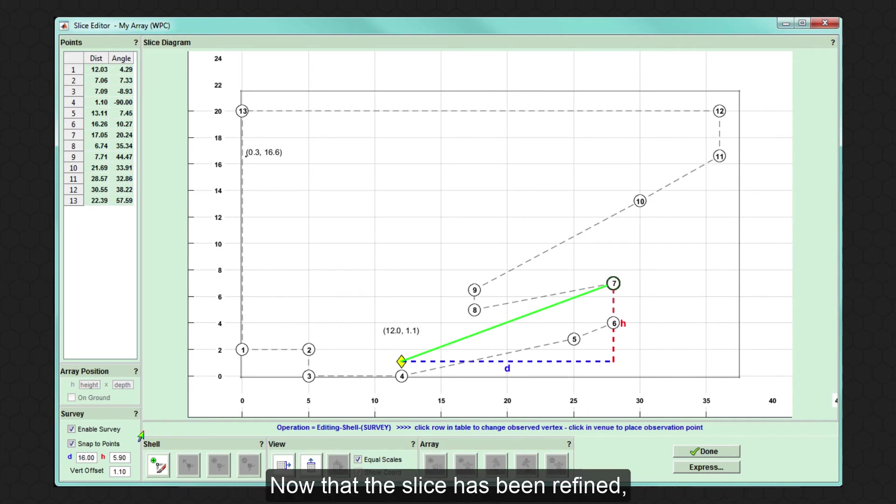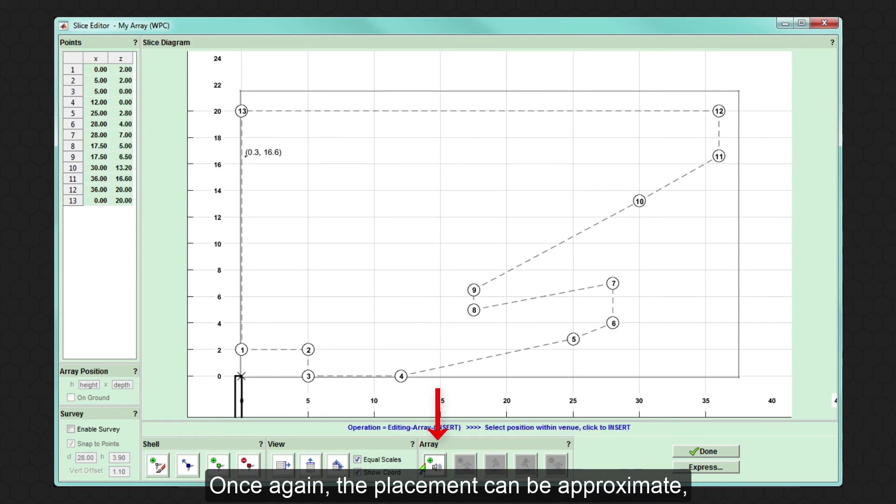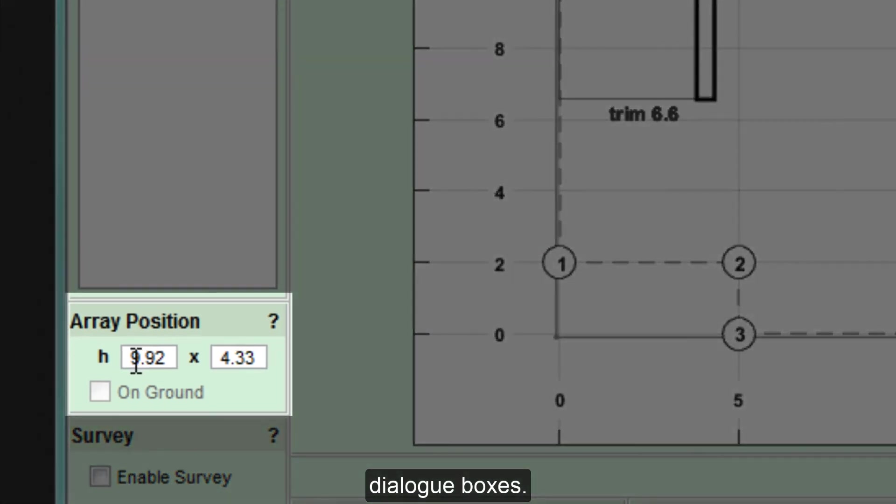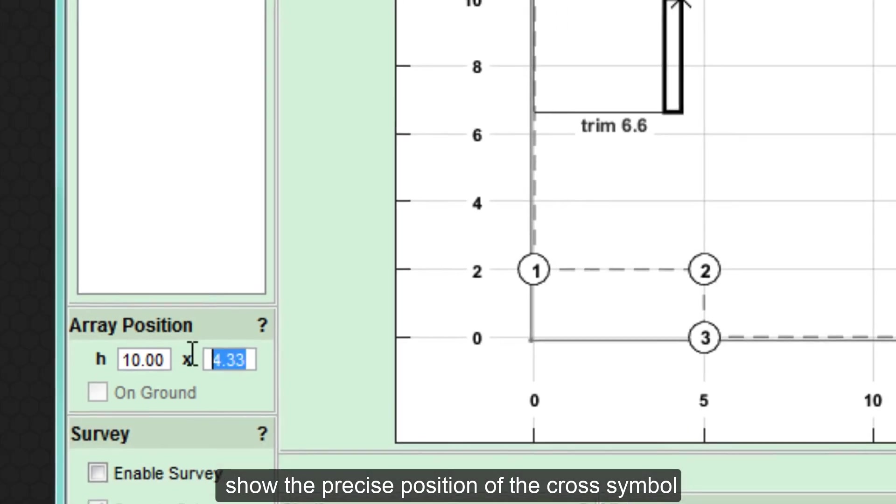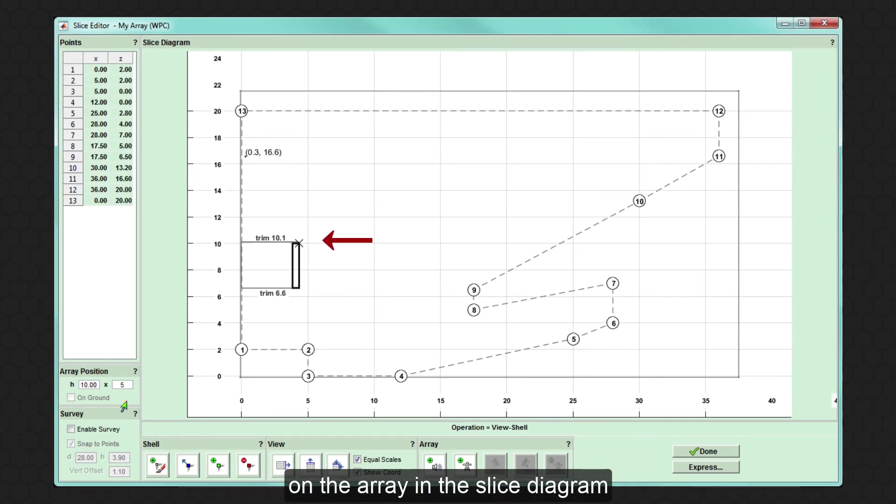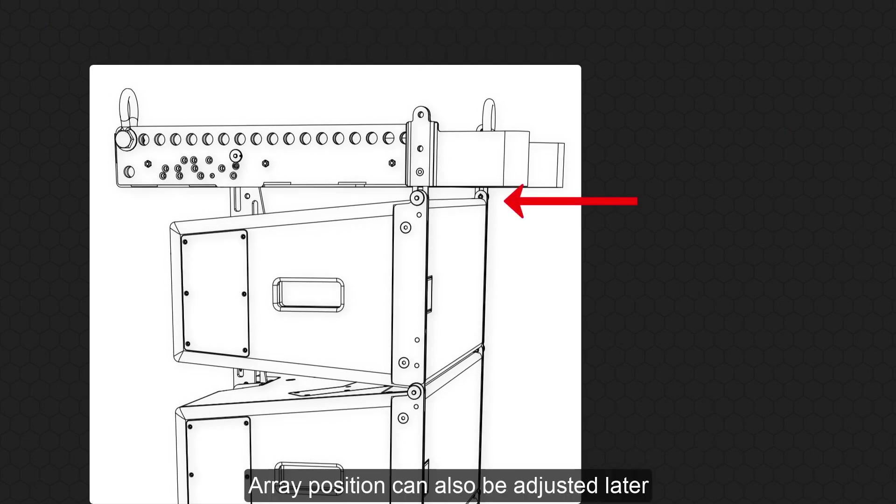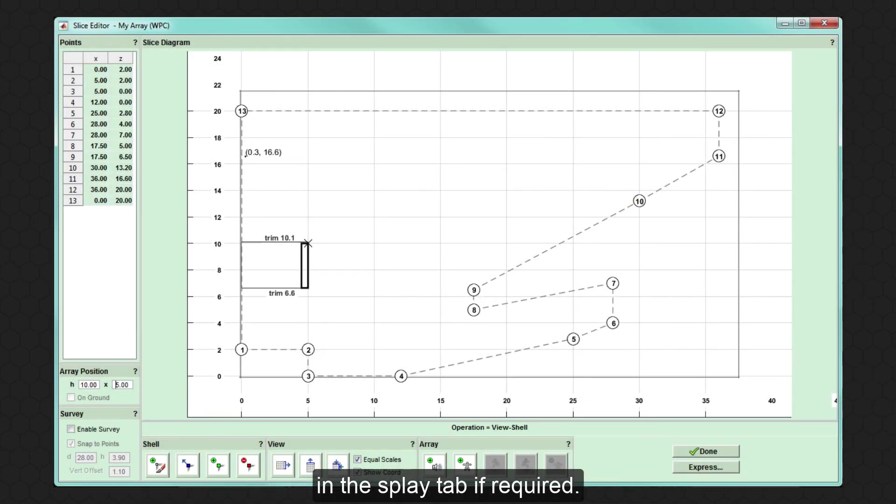Now that the slice has been refined, the selected array can be added. Once again, the placement can be approximate, then adjusted in the array position dialog boxes. The array position figures show the precise position of the cross symbol on the array in the slice diagram and corresponds to the front of the top cabinet in the array. Array position can also be adjusted later in the splay tab if required.